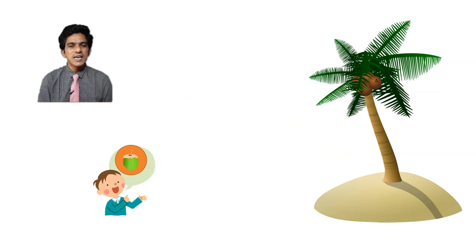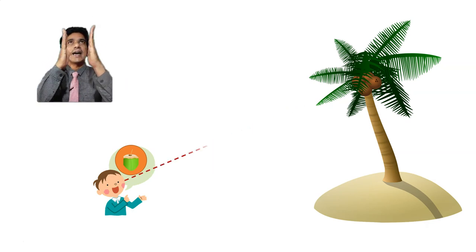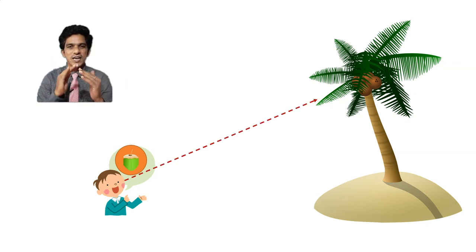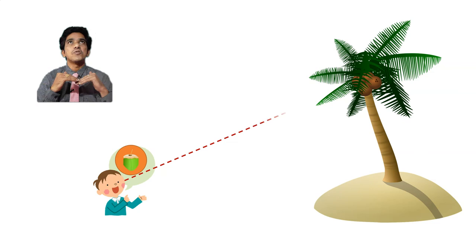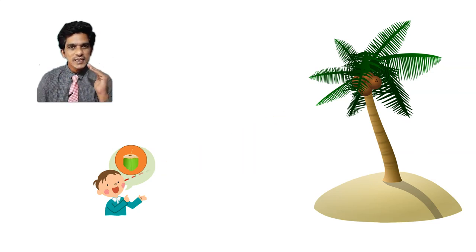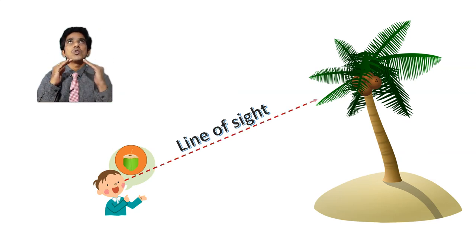This boy is feeling very thirsty and he wants to drink coconut water, so he is looking at the coconuts. If you look at what direction he is looking — he is looking upwards, because the coconuts are at a height. Suppose you are looking at an aeroplane flying in the sky — then also you have to direct your vision upwards.